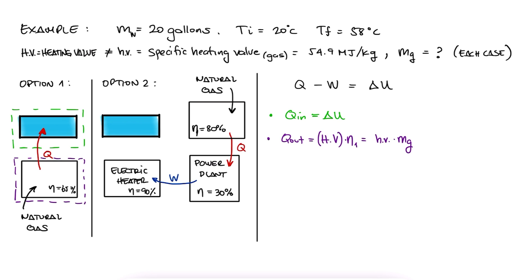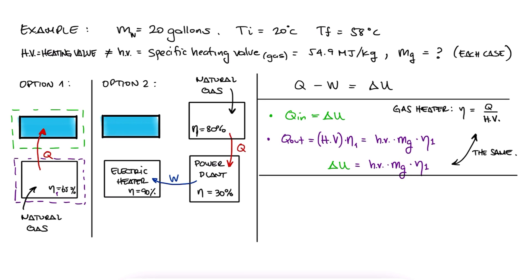Times the efficiency of the gas burner unit, is equal to the heat coming out. This means that it's also equal to the change in internal energy of the water. This we kind of already knew from what was previously mentioned, that for a gas heater, its efficiency was heat transferred divided by the total heating value.